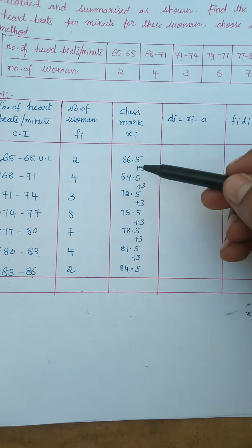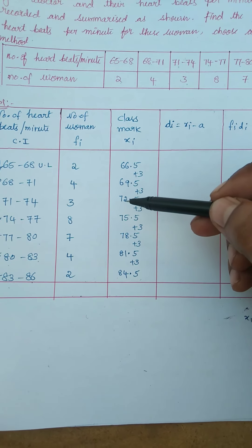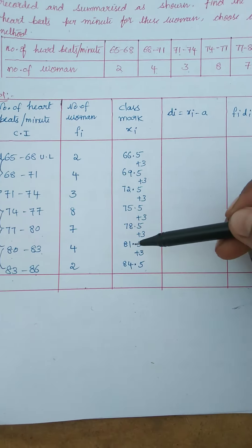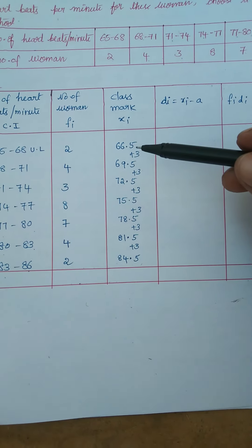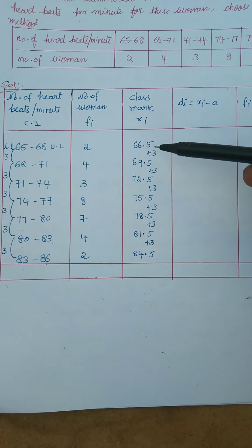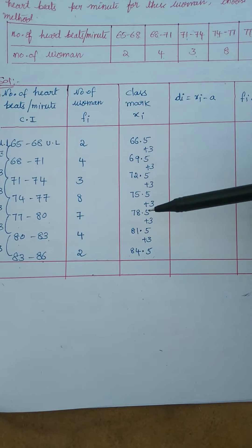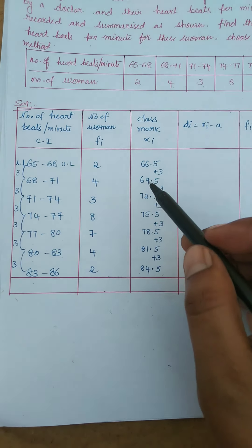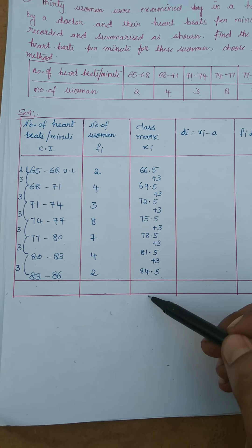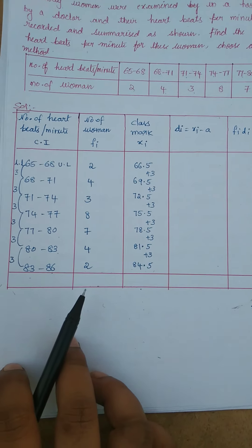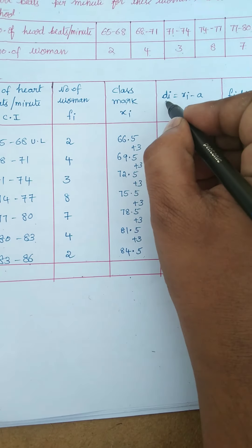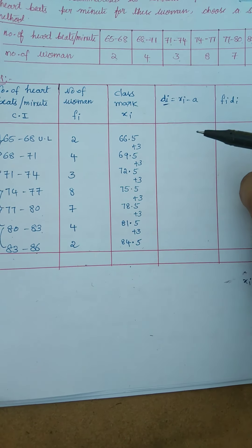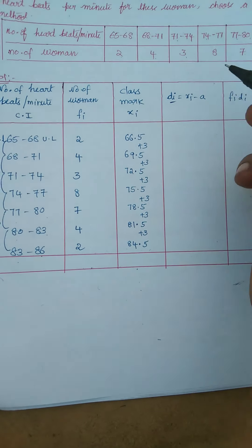Since the xi values are large, we use the assumed mean method. The formula to find the mean by assumed mean method is: x̄ = a + (Σfi·di) / Σfi. We need to find the value of a, which is the assumed mean — one value chosen from the xi values, preferably the middle one.